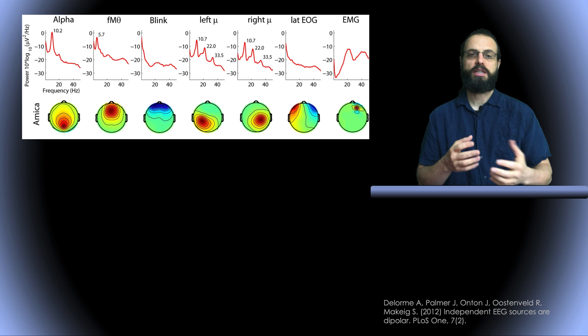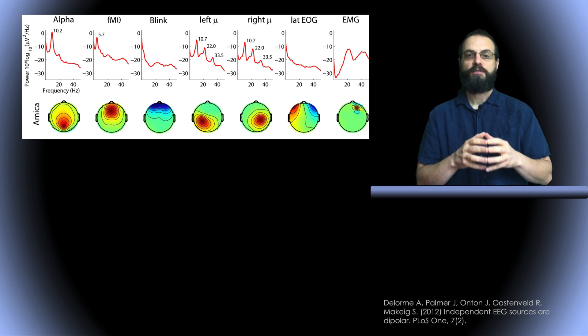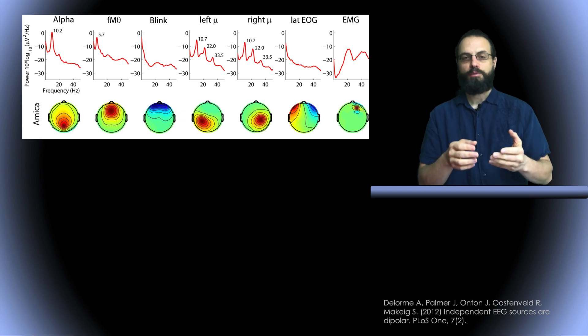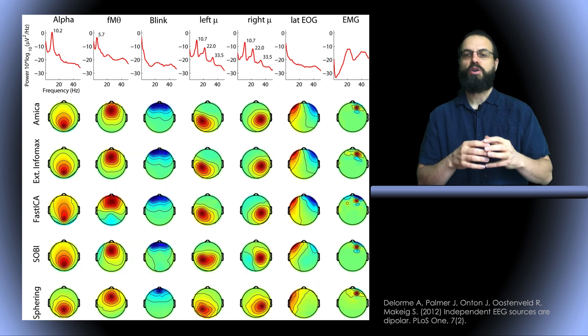How do these components look like? These are six, seven classes of ICA components. We have alpha rhythm—on top we have the spectrum, on the bottom we have the scalp topography of these components. We have frontal midline theta, blink components, left mu rhythm components, right mu rhythm component, lateral eye movements, and EMG components. We look, do the scalp topographies look the same across ICA decomposition or do they look very different? Basically they look almost the same in the different ICA decompositions.